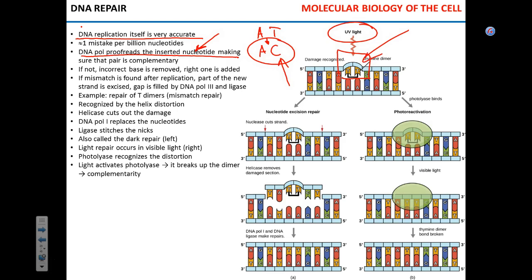When a DNA molecule is exposed to UV light, two adjacent thymines will form a dimer. There are two possibilities for repair. If light is still present, the enzyme called photolyase binds to the thymine dimer and chemically cleaves the bond between the two thymine residues. Since the bond is cleaved, the DNA now has a normal structure — the two thymines are separated and you have an intact DNA molecule.